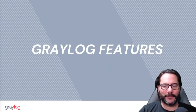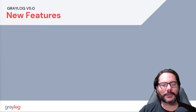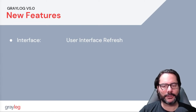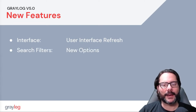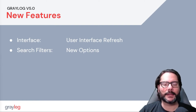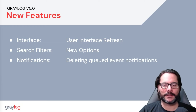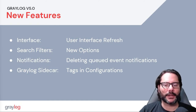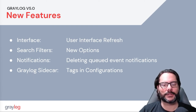Getting into the exciting new features inside of Greylog, let's look at the first group. We've done a refresh on the user interface, including new fonts and some small layout changes to make it easier to browse and interact with. We've added new search filters for shareable query snippets in Save Search, the ability to delete queued event notifications, and updated Greylog Sidecar with tag support for multiple configs per collector, so you can auto-configure your agents and automatically assign them to groups of configurations.